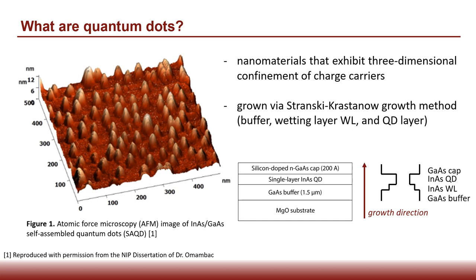followed by one or two monolayers of the dot material known as the wetting layer. After reaching a critical thickness, it becomes more energetically favorable to transition from layer-by-layer to island growth, thereby forming the quantum dots. Structures grown through this method are known as self-assembled quantum dots.